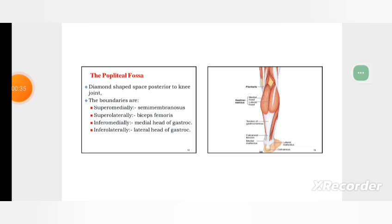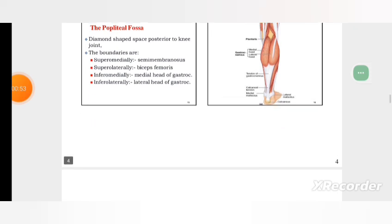There are four boundaries. Superomedially semimembranosus, suprolaterally biceps femoris, inferomedially medial head of gastrocnemius, and inferolaterally lateral head of gastrocnemius.